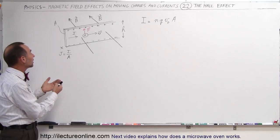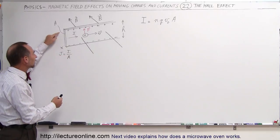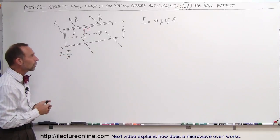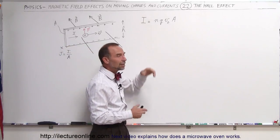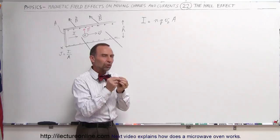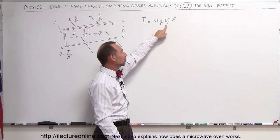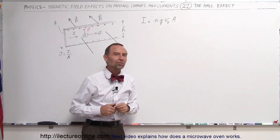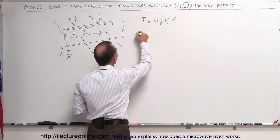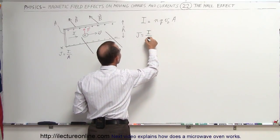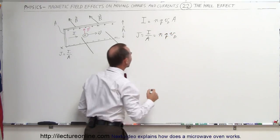Now, the current density. By definition, current density is equal to the current flowing through the conductor divided by the cross-sectional area, which in this case is x times h. Also notice that the current equals the charge density — the number of charges per unit volume — times the size of each charge, times the drift velocity, times the cross-sectional area. So the current density j equals n times q times the drift velocity.